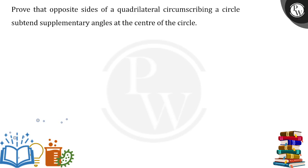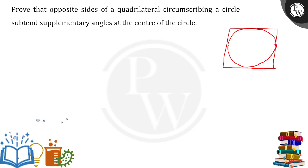First of all, we are having a circle formed inside a quadrilateral. So let us say this is a quadrilateral and inside this we are having a circle. I give the name to this quadrilateral as ABCD, and the center will be O.